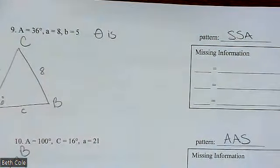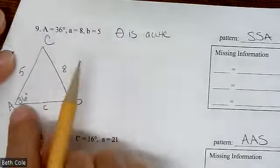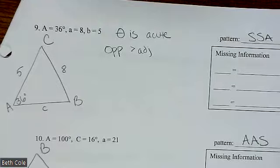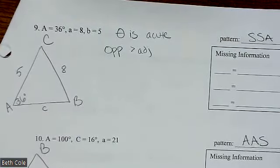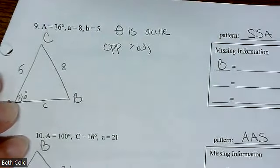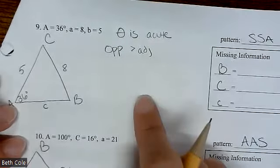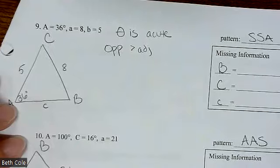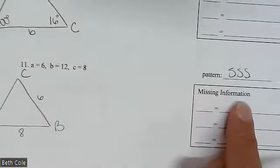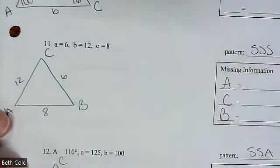For problem 9 — side-side-angle — we write: theta is acute. The opposite is 8. Just do the problem. First find angle B, then angle C, then side c. For the SSS problem — that's the tougher one — you have to find angles smallest to biggest: find A first, then C, then B. It's going to be: 6² = 12² + 8² − 2(12)(8)cosA.